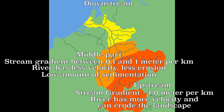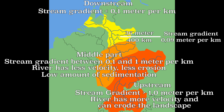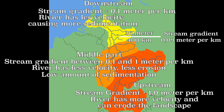Downstream, near the river mouth, the stream gradient is usually lower than 0.1 meters per kilometer. From Cologne it is about 400 kilometers to the mouth of the Rhine, with a 36-meter drop in elevation — 36 divided by 400 equals 0.09. Due to the low stream gradient, the river has less eroding force and sedimentation will occur. The following video will explain how floods occur.